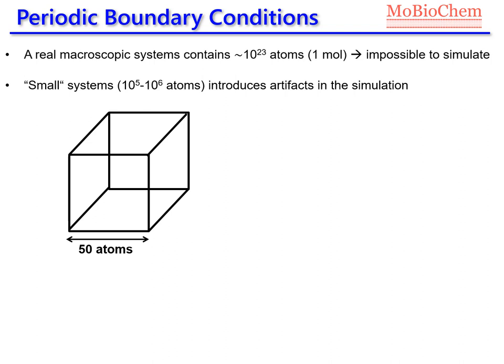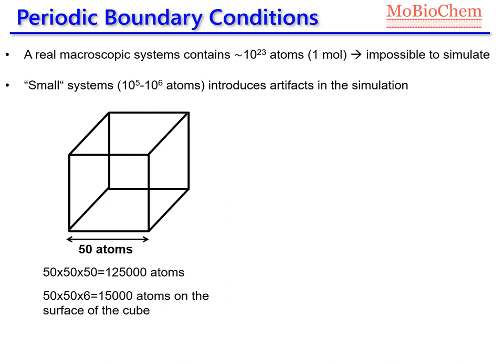For example, let's assume this is our simulation box. We are assuming a cubic box which contains 50 atoms in each of the dimensions of the system. That means we have in total, in the full volume of the cube, 125,000 atoms, which is a standard size nowadays in molecular dynamics simulations. Now, if we count the number of atoms we have on the faces of the cube, we will see we have 15,000 atoms on the surface. So that means 12% of the atoms of our system are interacting with the vacuum.